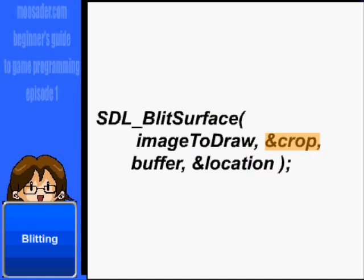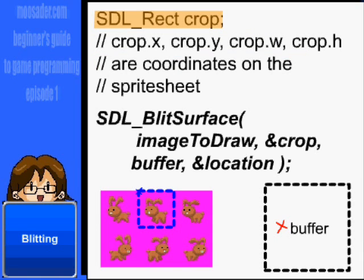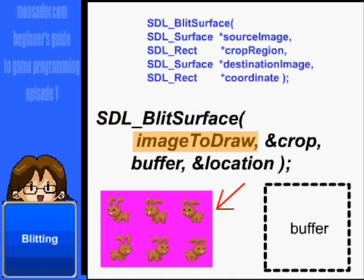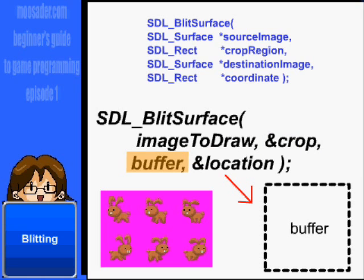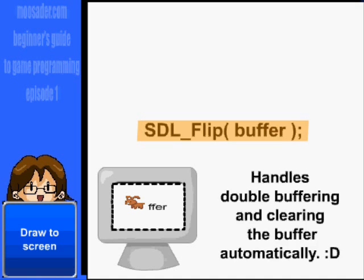In SDL, its blit function takes drawing and cropping coordinates from two rectangle objects called SDL_Rect. location.x and location.y are where the image is actually drawn to on the buffer, or the destination surface. And crop.x, crop.y, crop.w, and crop.h denote what off the sprite sheet you'll draw. So the function is SDL_BlitSurface, taking the image to draw, the crop rectangle, the image to draw to (our buffer), and the location rectangle. Once you draw all the images to the buffer, use SDL_Flip to draw the buffer to the screen. SDL_Flip handles double buffering and clearing the buffer for you automatically.